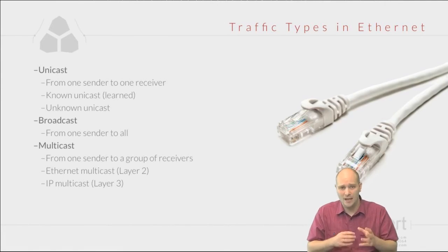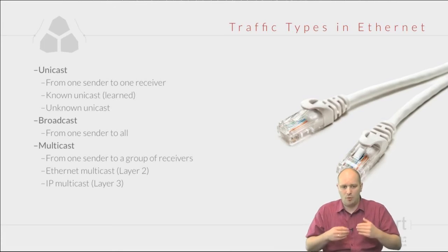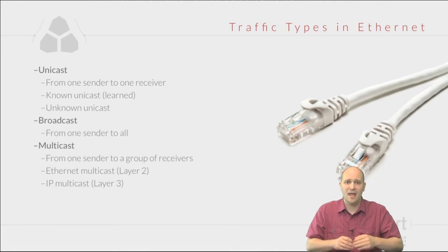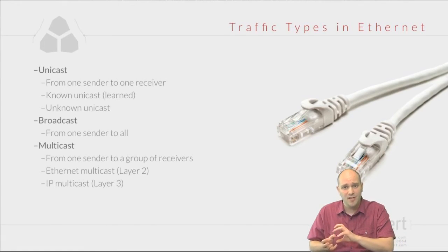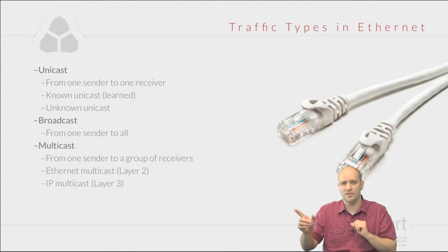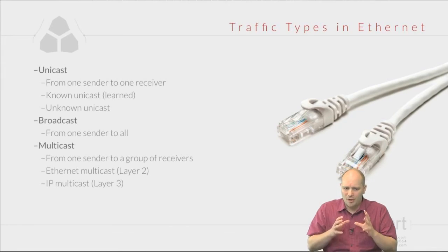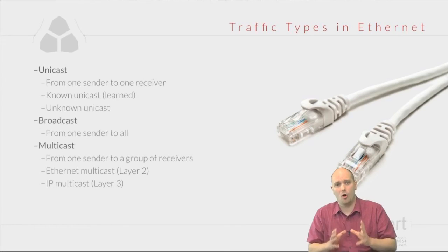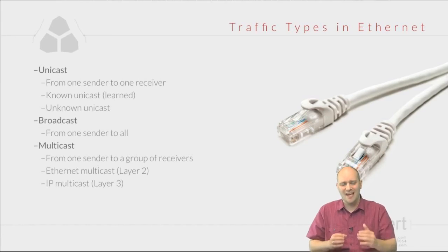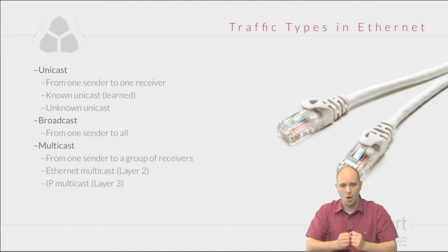For example, ARP is a protocol used to resolve the mapping between layer 3 addresses — IP addresses — and Ethernet addresses. How did A know the address of B? It uses ARP for that purpose. Broadcast is a functionality of Ethernet that makes communication much simpler, because it allows stations to dynamically learn information about other hosts on the network.